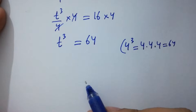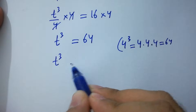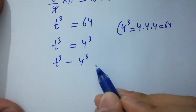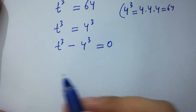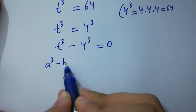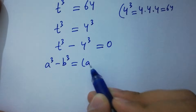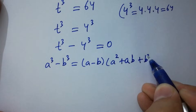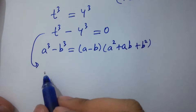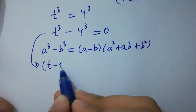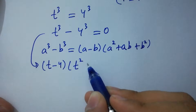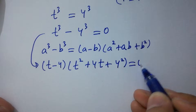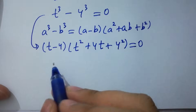So it will be t cubed equals 4 cubed, meaning t cubed minus 4 cubed equals 0. We know the formula of a cubed minus b cubed, which equals (a minus b)(a squared plus ab plus b squared). We have (t minus 4)(t squared plus 4t plus 4 squared) equals 0, giving us two cases.